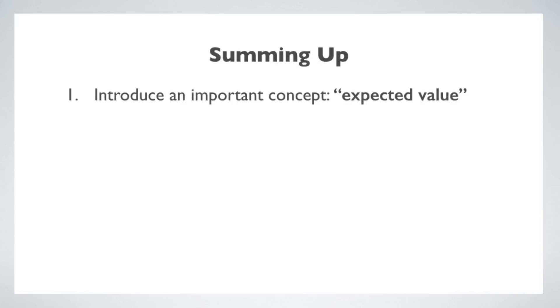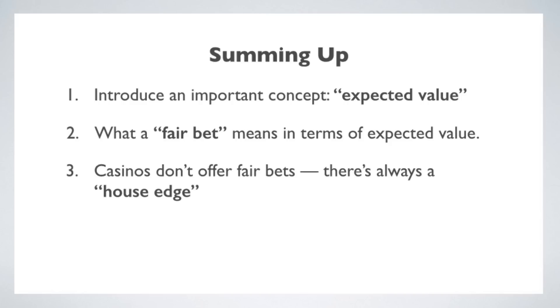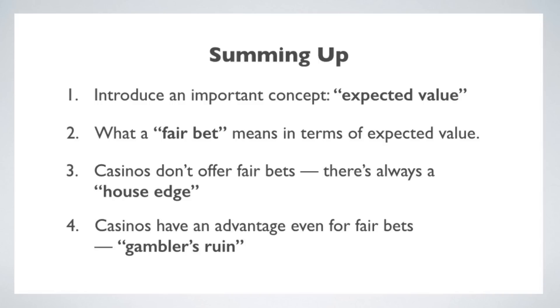We've covered quite a bit of ground here, so let's sum up. The key concept introduced is the expected value of an act, used to analyze the concept of a fair bet. We learned that casinos don't generally offer fair bets — there's always a house edge that favors the casino, which is the primary source of their revenue. But even if they did offer fair bets, they would still have an advantage due to the huge disparity in total money available to bet, known as the gambler's ruin. On the face of it, given the way the odds are stacked against the gambler, casino gambling seems like a textbook irrational behavior. But it's more complicated — people win every day, gambling is exciting, and you can think of losses as the price for an entertaining evening. But there's a darker side: gambling can be habit-forming and for some addictive and very damaging. In the last video, I want to look at the psychology of gambling and talk about the role that the gambler's fallacy and other cognitive errors play in explaining our actual gambling behavior.